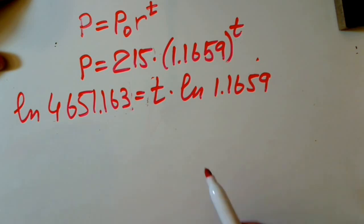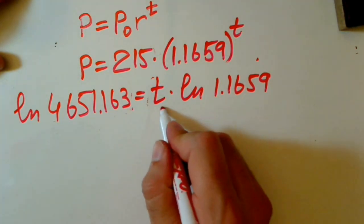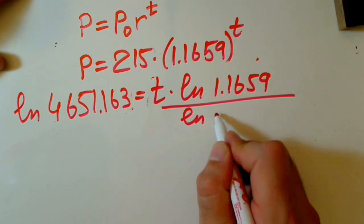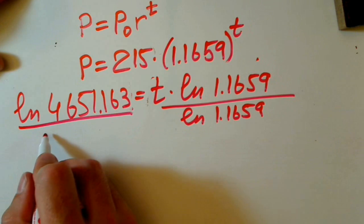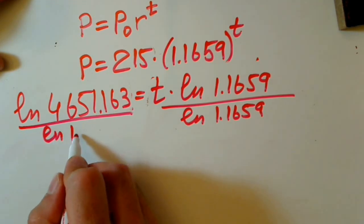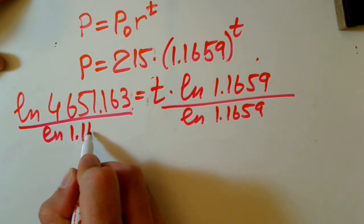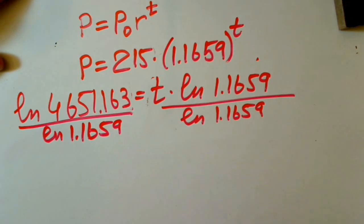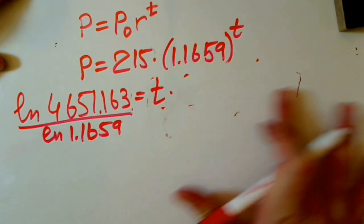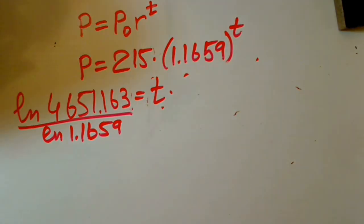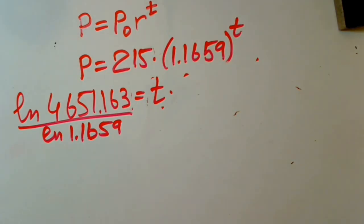I hope you can understand what I'm writing. Now, to find T, we should divide by science by ln 1.1659. And what is our T? And our T actually equals to this number, use calculator to find this.